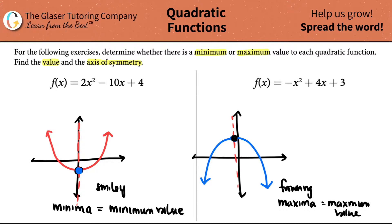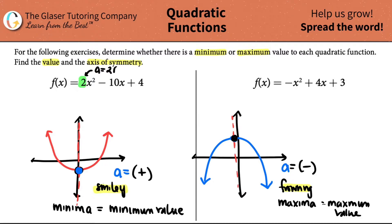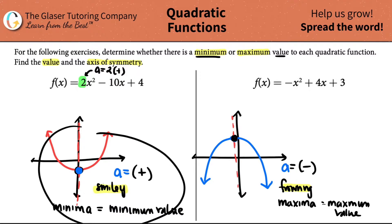How do we know if a graph is going to be smiling or frowning? The answer lies in the A value. If you're smiling, you're happy — smiling is positive. So the A value has to be positive. Frowning is negative. And remember, the A value is always in front of the X squared value. So in the first example, my A value is equal to two — a positive value. So I know that I'm going to have a minimum value; it's a smiley face.